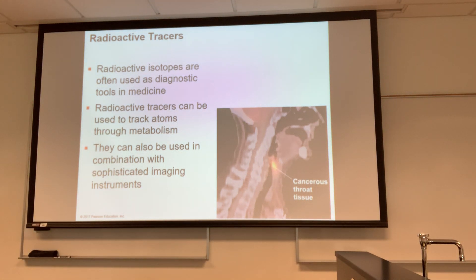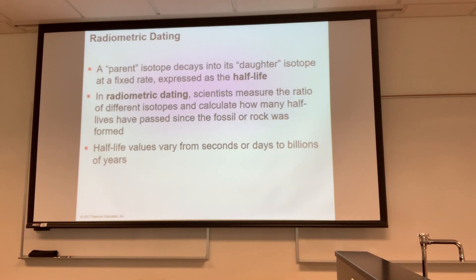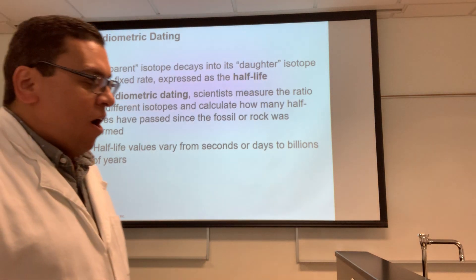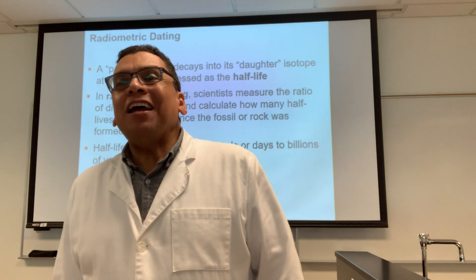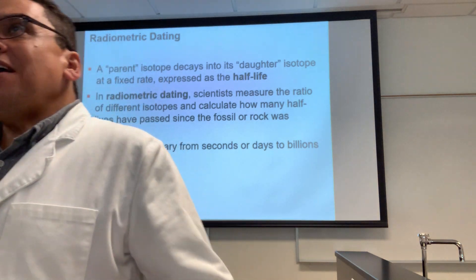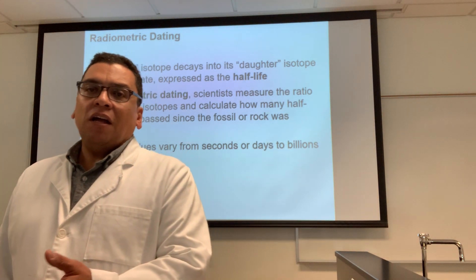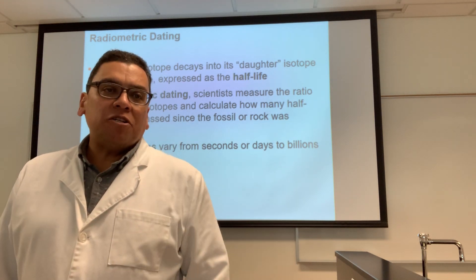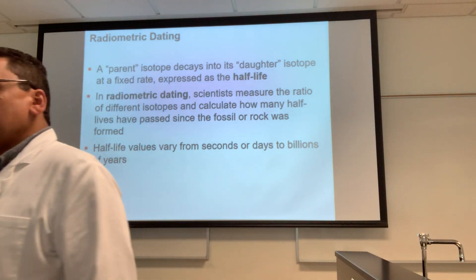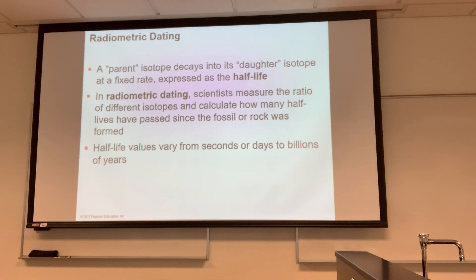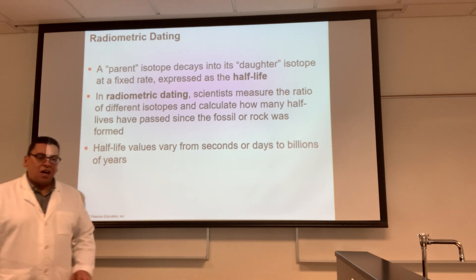So those are isotopes — isotopes differ in the number of neutrons. But then there is something else called ions. Ions — it's the same element, but what's changing is the number of electrons. Watch out for that: isotopes — it's the neutrons that are changing; ions — it's the electrons that are changing. Some elements lose electrons, some elements gain electrons, and they're both called ions.